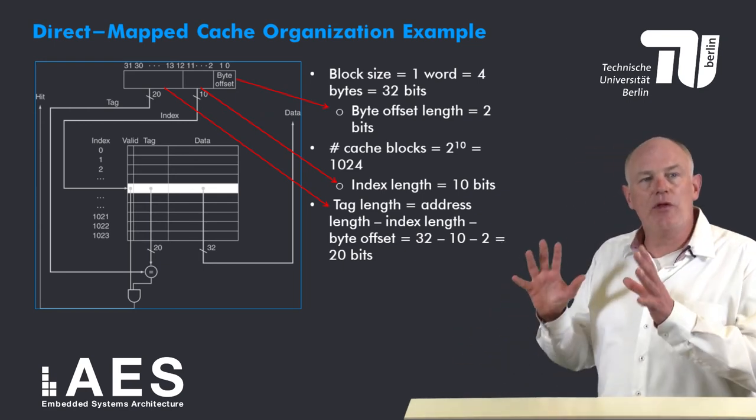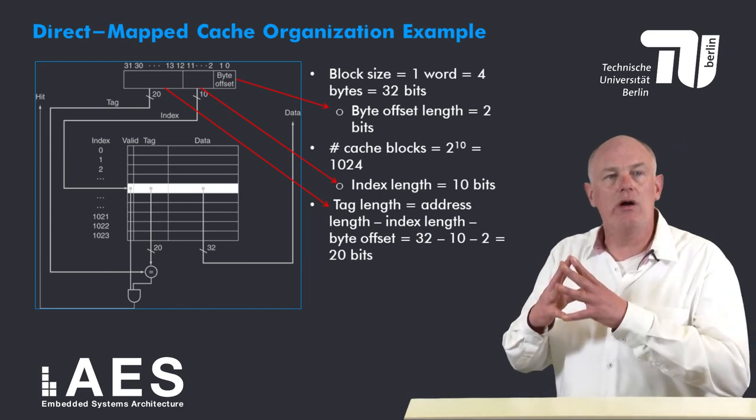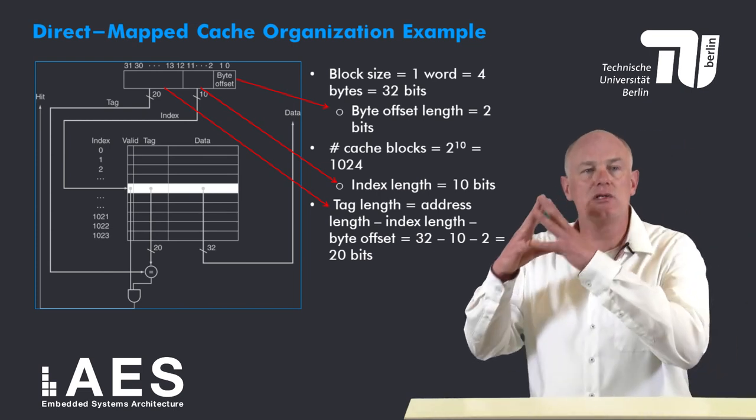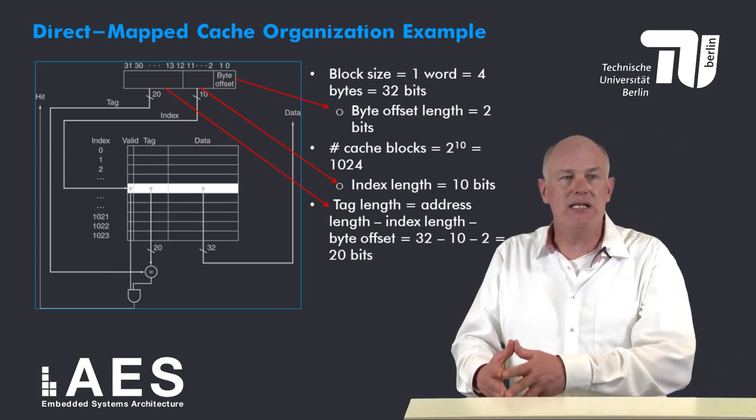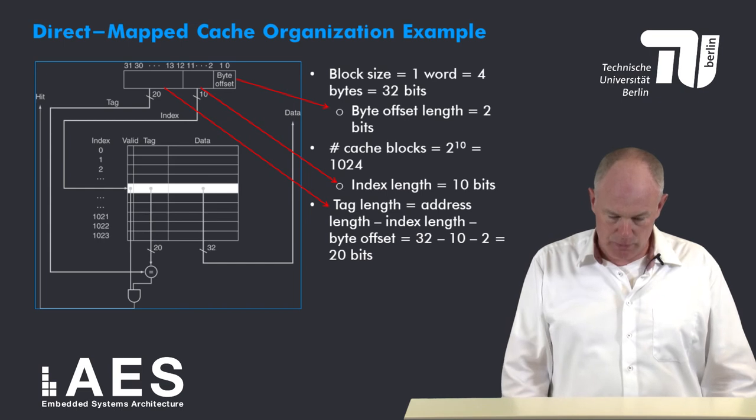In this example the block size is one word, which corresponds to four bytes in MIPS and equals 32 bits.